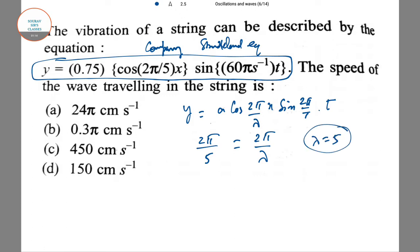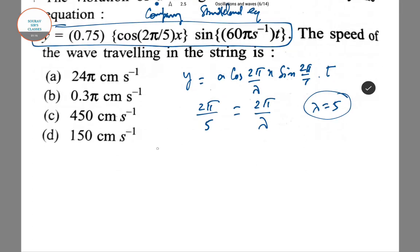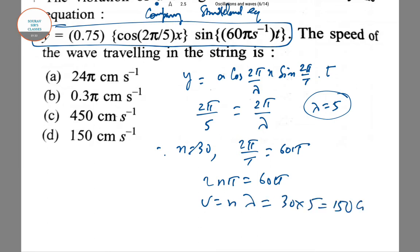Now as n = 30 and 2π/T = 60π, we get 2nπ = 60π. So v = nλ, that is 30 × 5 = 150 cm/s. So option D is the answer.